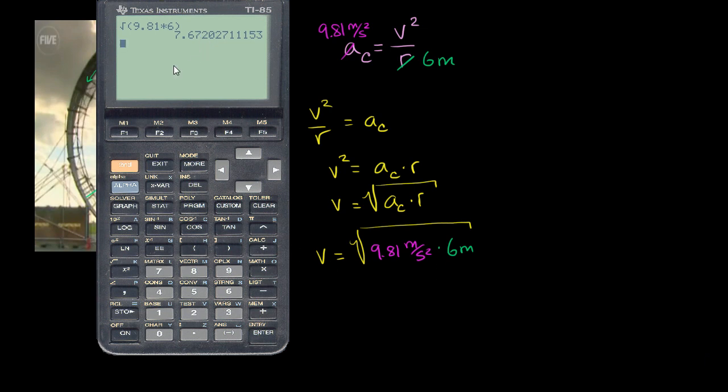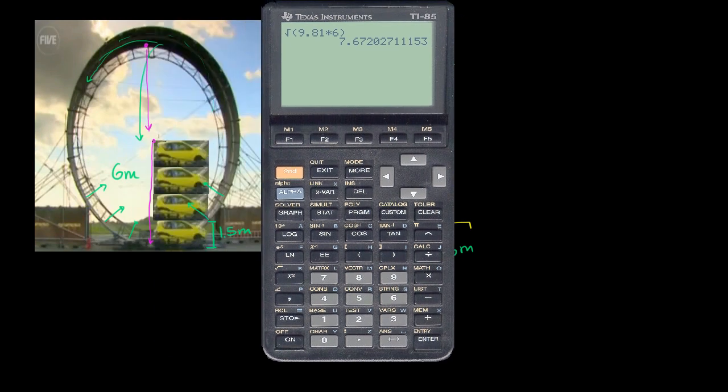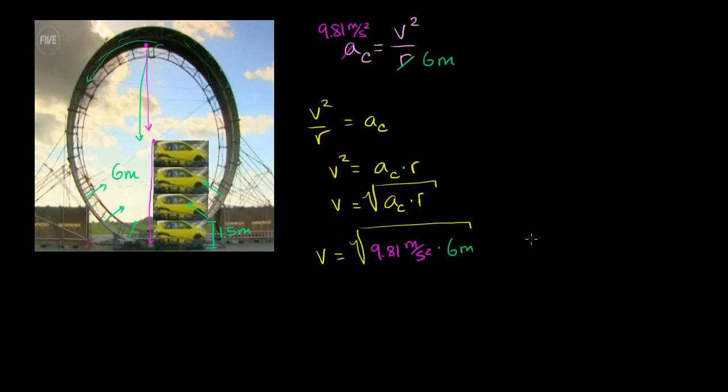And significant digits is the whole conversation because this is just a very, very rough approximation. I'm not able to measure this that accurately at all. But I get roughly 7.7 meters per second. And just to give a sense of how that translates into units that we're used to when we're driving cars, we can convert 7.7 meters per second.